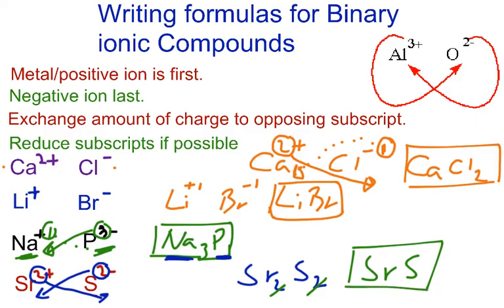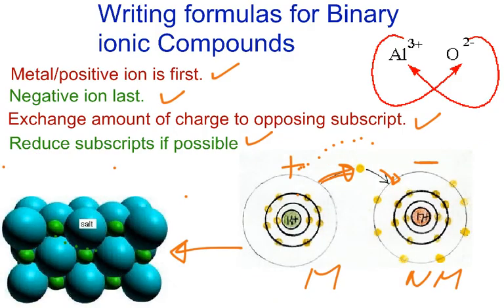All right, so this is a simple video, a simple presentation of how to write the formulas for binary ionic compounds. The metal ion always comes first. The non-metal ion, the negative ion always comes last. And what you're doing, you're making sure that your charges are balanced. And you're good to go. And so take care, be well.